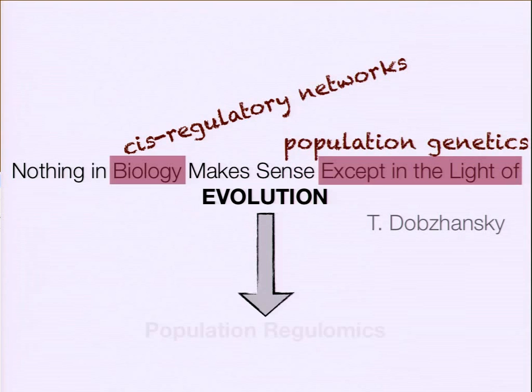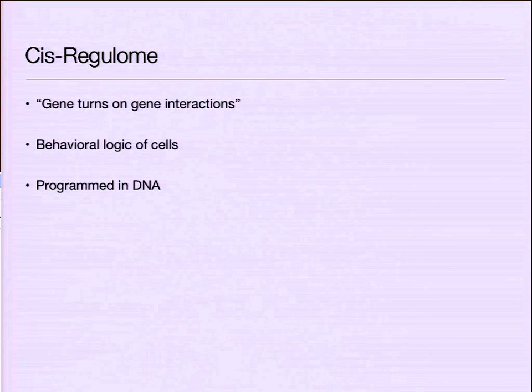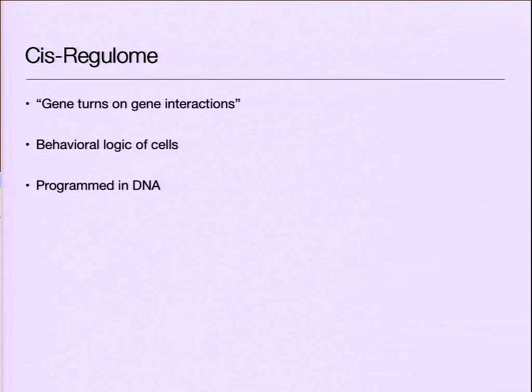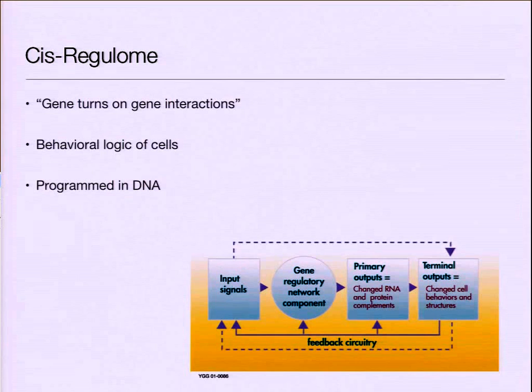The story starts with introducing what is a cis-regulome. Mark gave us a pretty good introduction to binding sites and gene regulation. The cis-regulome — you can think of the genome as your collection of genes, and the cis-regulome is the collection of regulatory interactions within the cell. It's a critical piece in the input-output program that a cell implements.